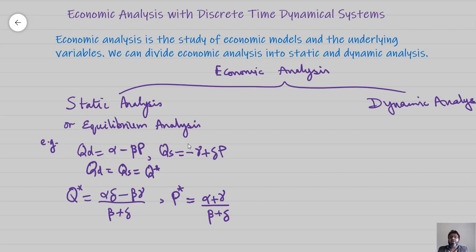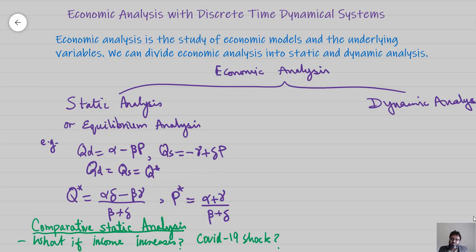Now suppose we want to see the impact of changes in model parameters like alpha, beta, gamma, and delta. For instance, if the income of the individual increases, how would it impact demand? In that case, parameter alpha would change. We can find these changes in the parameters and their impact on the equilibrium values of the underlying variables using the tools of derivatives, and that falls under comparative static analysis.